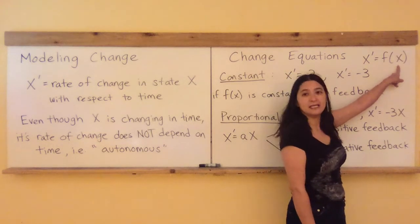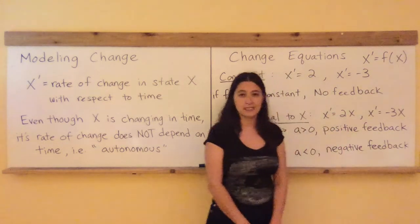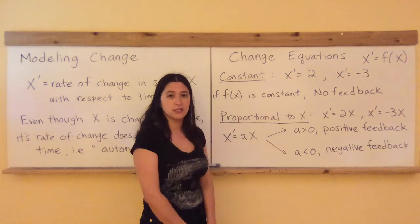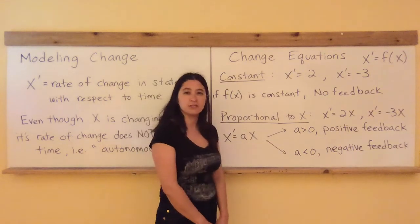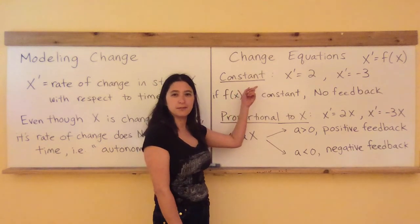Let's look at some classic examples of change equations. Probably the simplest form of a change equation would be to let f of X equal some constant. Some examples of this are X prime equals positive 2 and X prime equals negative 3.